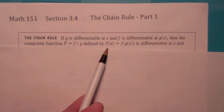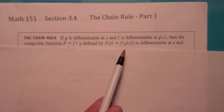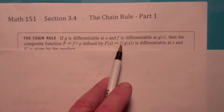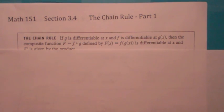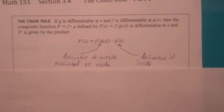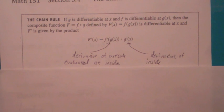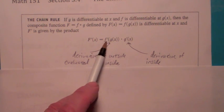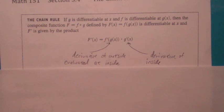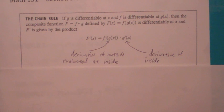Suppose you have a function F of x equals f of g of x. g of x would be considered the inside function, and f would be the outside function. What the chain rule says, if you want to differentiate a composition f of g of x, you first take the derivative of the outside function f, so you get f prime, but evaluate it at the inside function — keep the inside function fixed, don't do anything to it. Then on the next step, multiply by the derivative of the inside function. That's how it works.